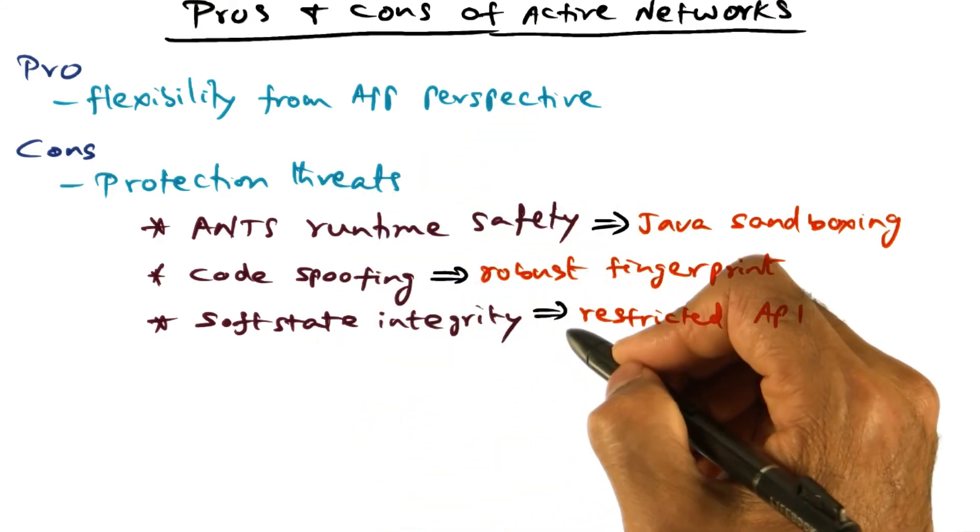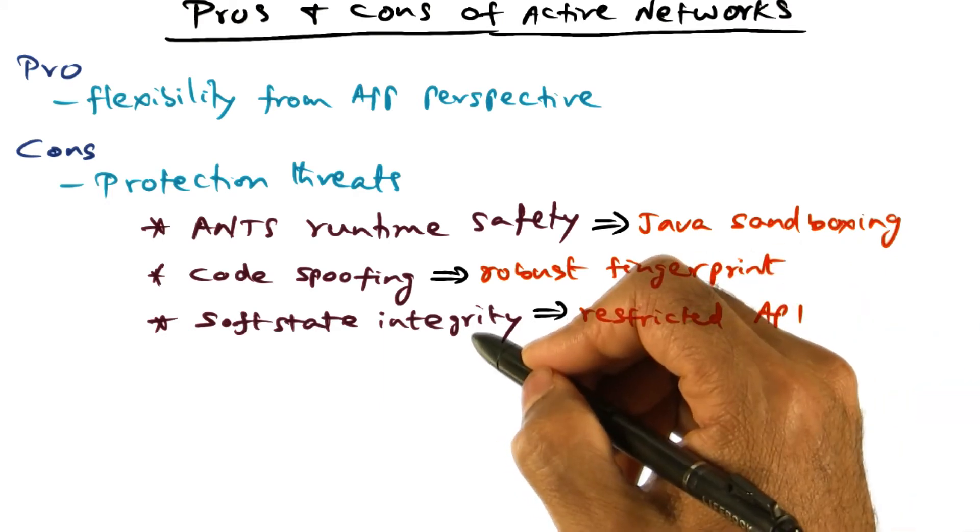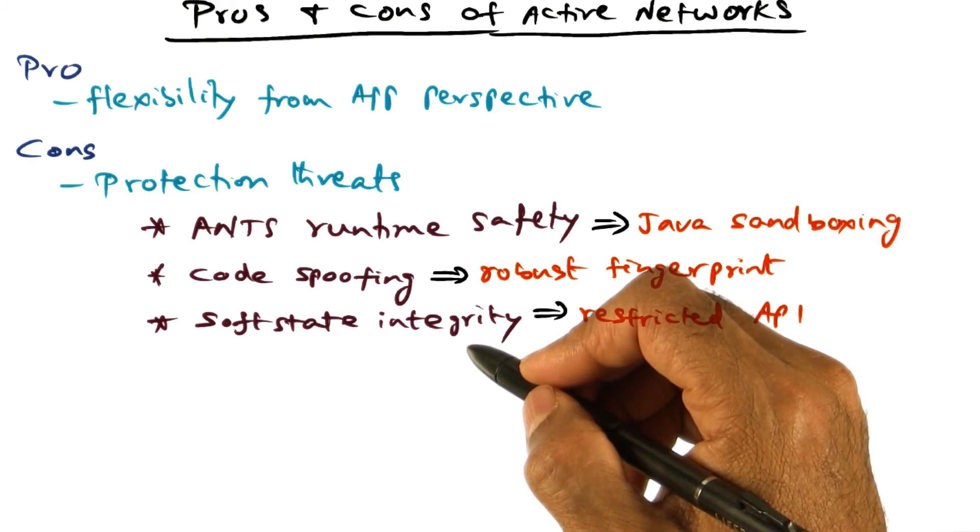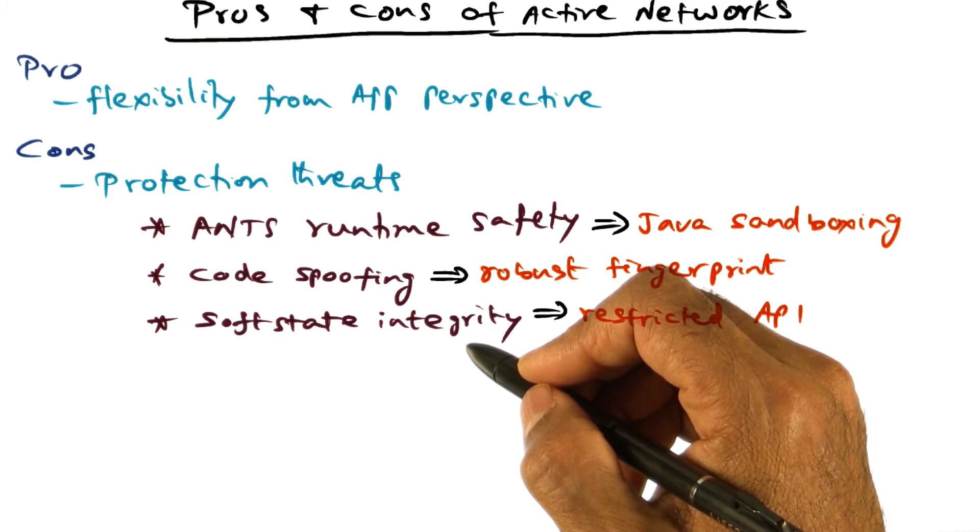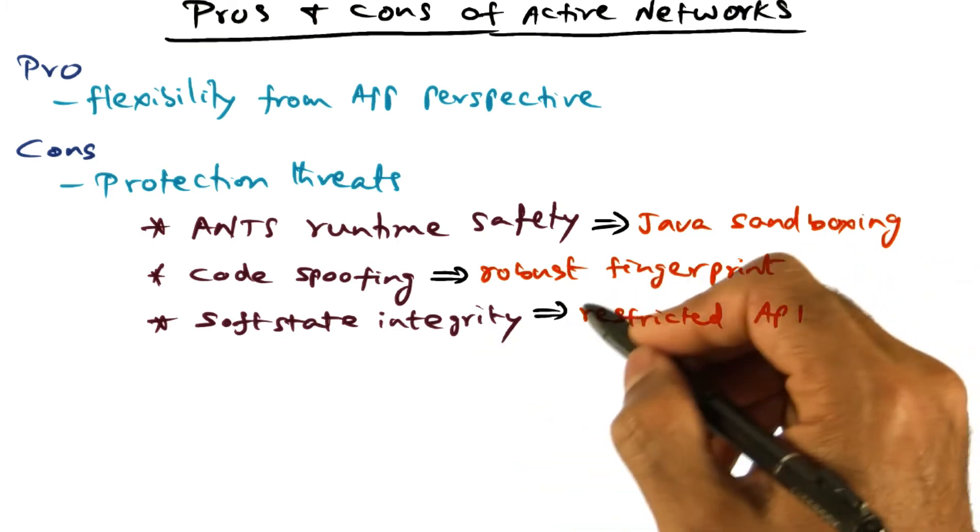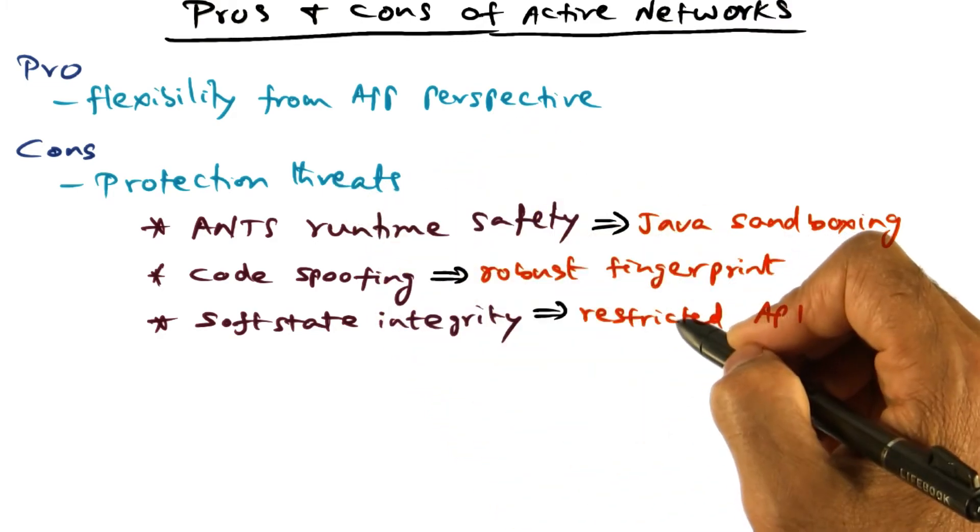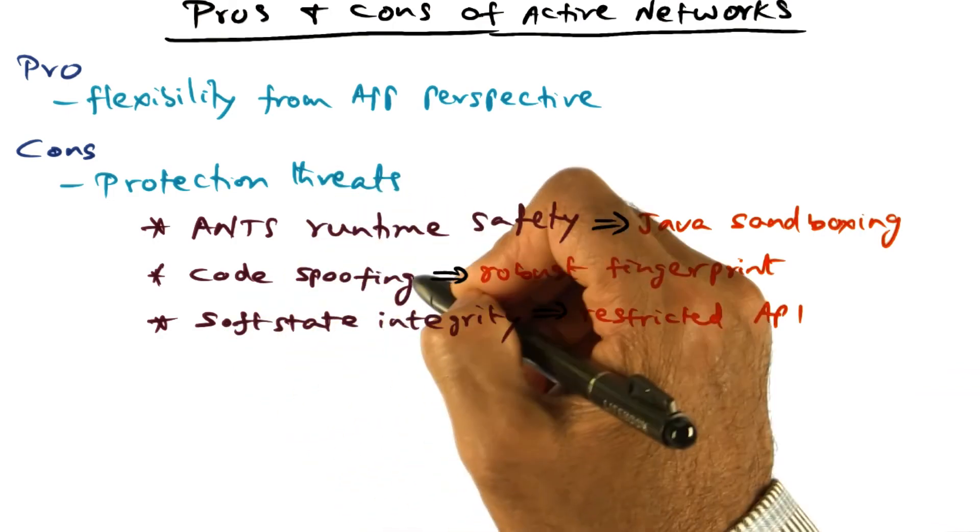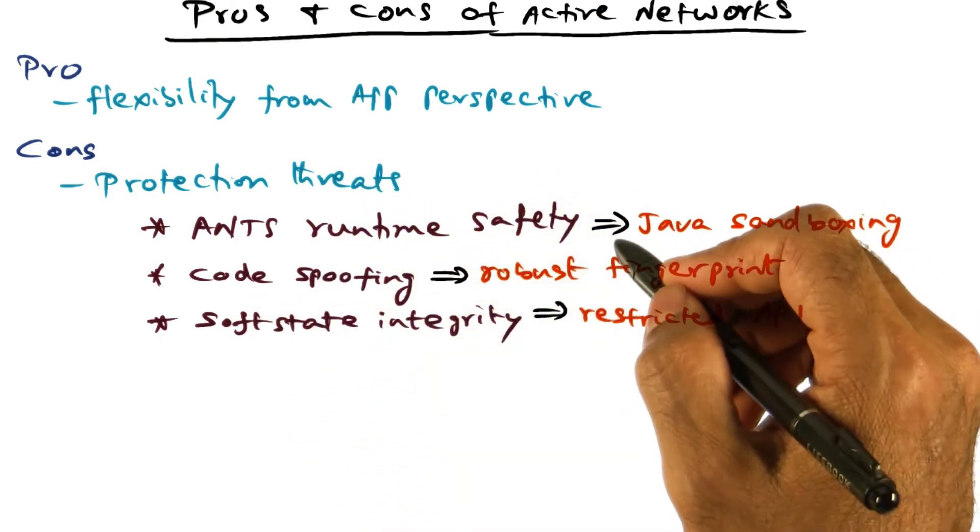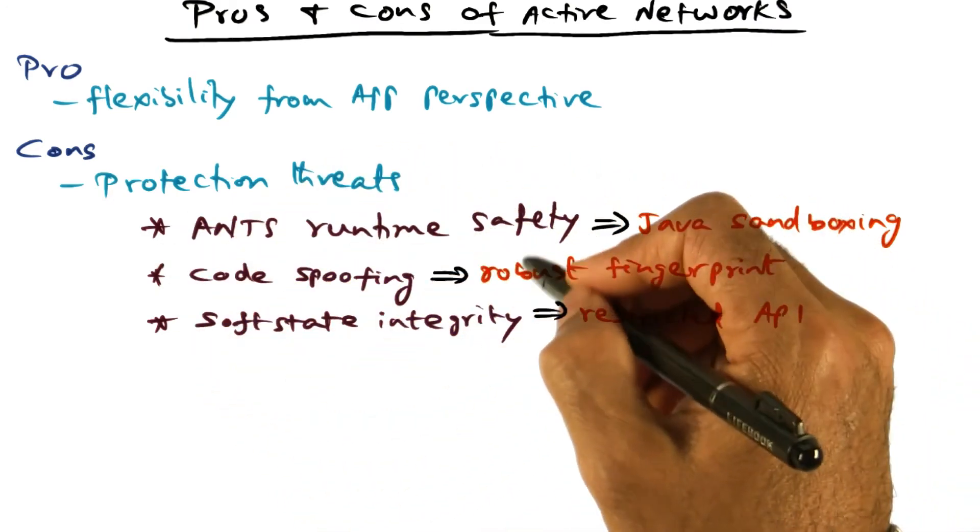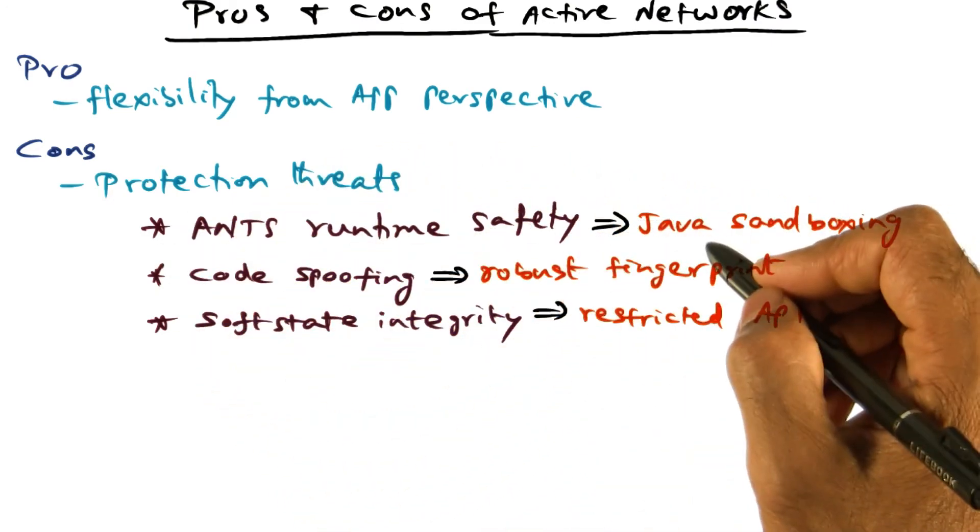And the third concern can be integrity of the soft state. And what I mean by that is, the soft store that's available at a router node is limited in size, and you don't want any particular network flow to arbitrarily consume all of the soft state. And here again, there is a restricted API that is provided in ANTS, that's the safeguard for this protection threat. So, these protection threats are concerns, but at least in the ANTS toolkit, they offer solutions to ensure that these protection threats are not showstoppers for active networks.